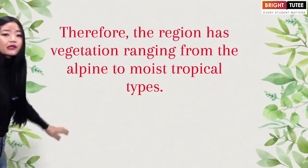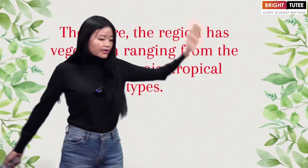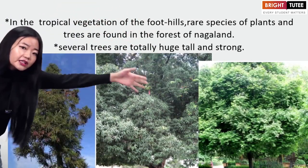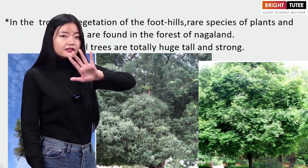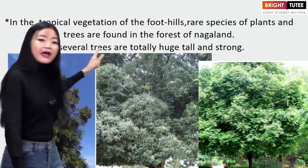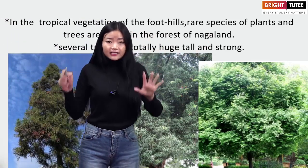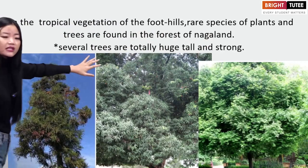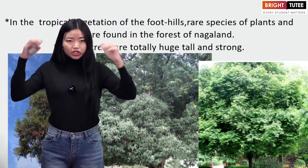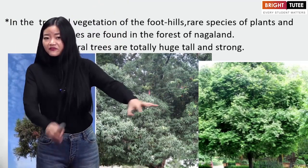We are very blessed — the state of Nagaland has vegetation ranging from alpine types to moist tropical types. In the tropical vegetation of the foothills, you will find rare species of plants and trees in the forests of Nagaland. Some trees are very tall, very huge, and very strong.